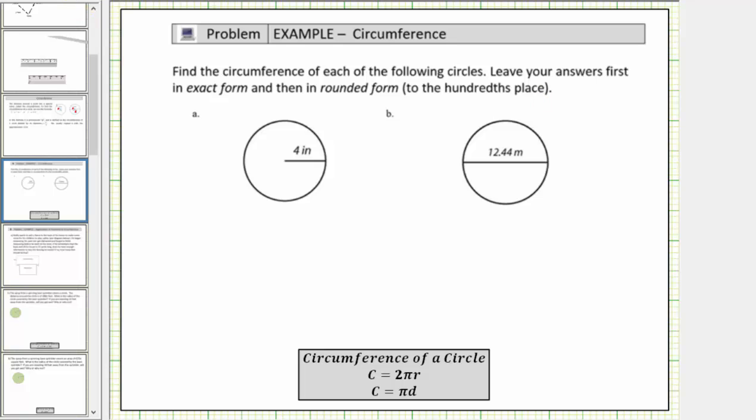So looking at the first circle, notice how we're given the radius r equals 4 inches, and therefore we will use the circumference formula C equals 2πr. And now we substitute 4 inches for r.